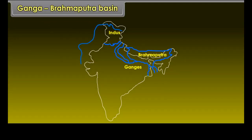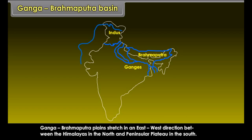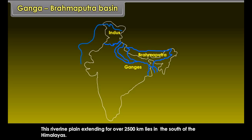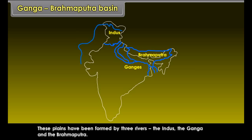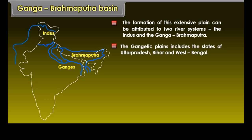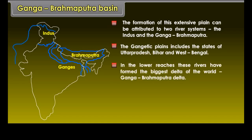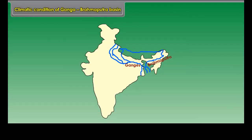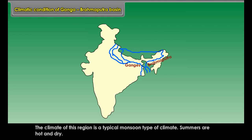The Ganga Brahmaputra plains stretch in an east-west direction between the Himalayas in the north and the Peninsular Plateau in the south. This riverine plain, extending for over 2,500 km, lies south of the Himalayas. These plains have been formed by three rivers: the Indus, the Ganga, and the Brahmaputra. The Gangetic plains include the states of Uttar Pradesh, Bihar, and West Bengal. In the lower reaches, these rivers have formed the biggest delta of the world. The Ganga Brahmaputra Basin has a rich layer of alluvial soil, making it one of the most fertile regions in the world.